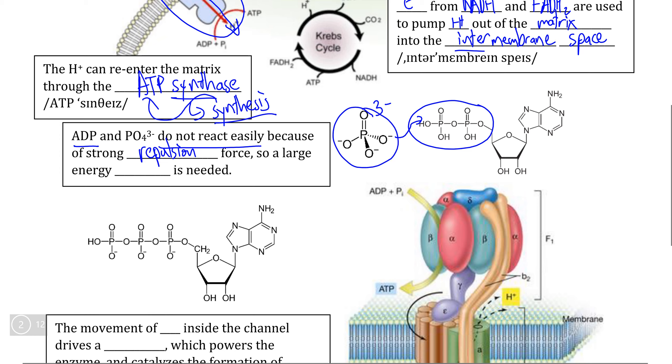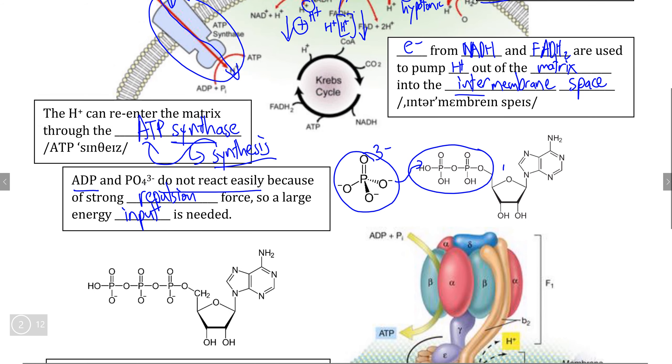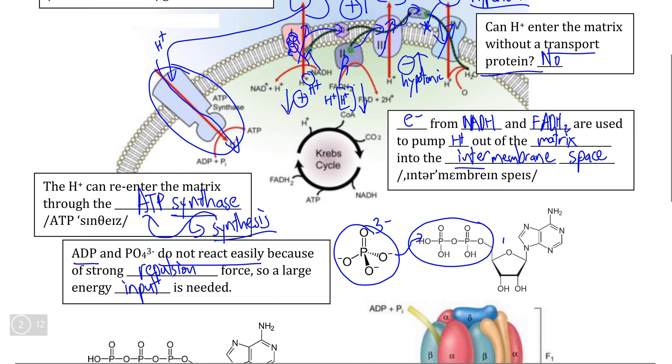Therefore, in order to force this phosphate to do something that it doesn't want to do, that being forming a bond with the second phosphate on ADP, a large energy input is needed. And the way that this is done in substrate level phosphorylation is we take this phosphate and make it even more unstable by putting it on a specific substrate of glycolysis or Krebs cycle.